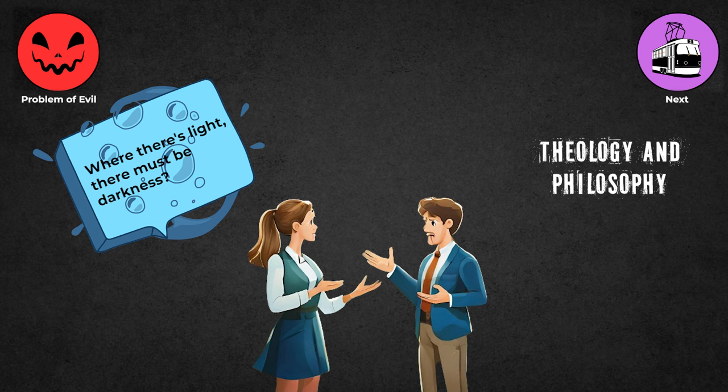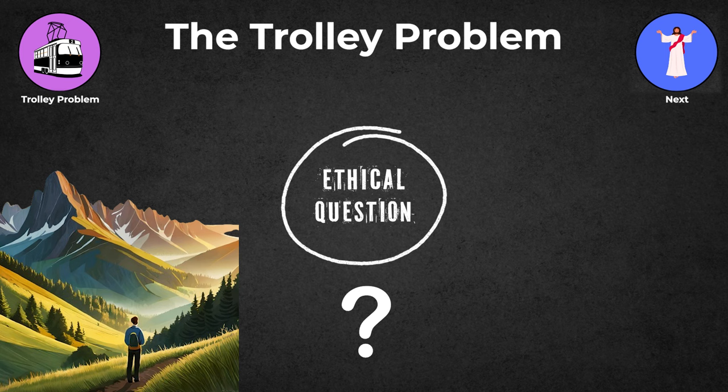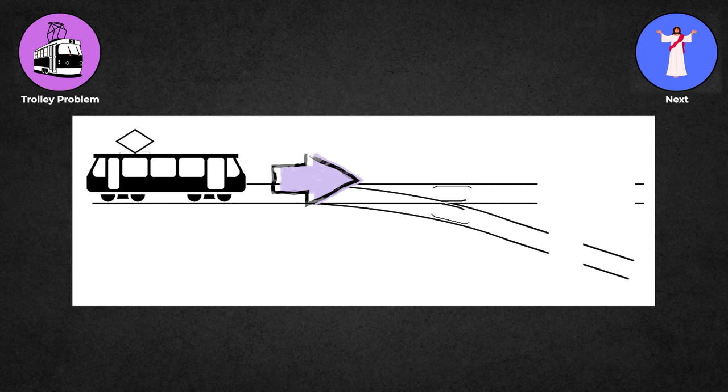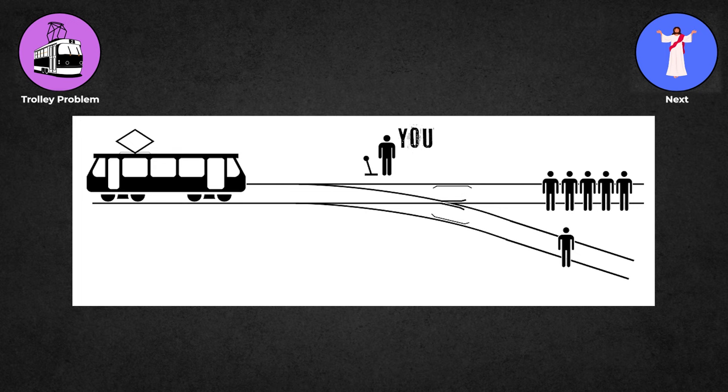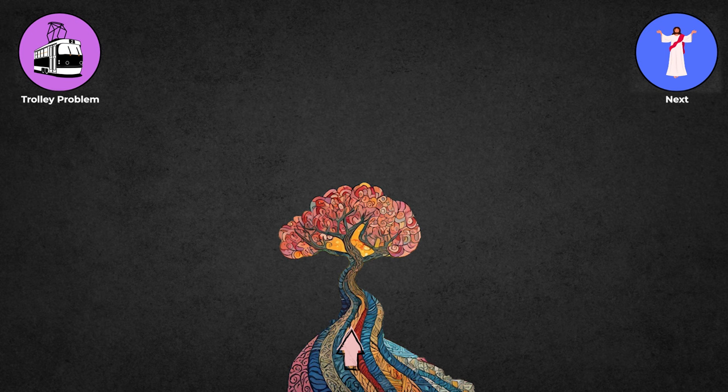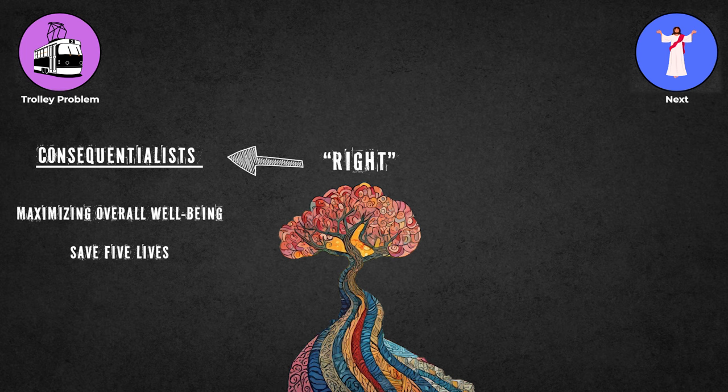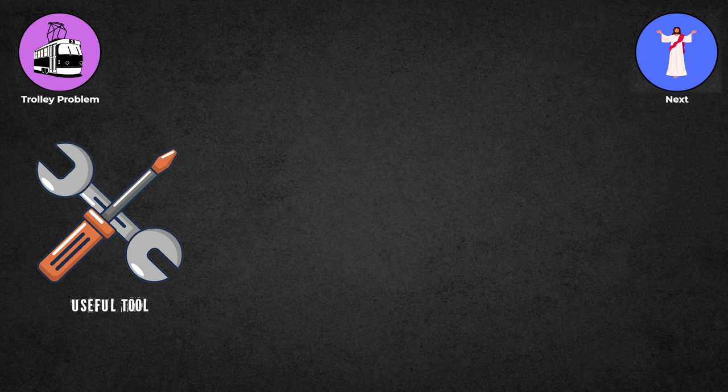The Trolley Problem: This scenario asks the difficult ethical question, would you sacrifice one person to save many people? Imagine a trolley speeding down a track about to hit five people. You're next to a lever that can divert the trolley to another track, but there's one person there. Do you pull the lever to save five people at the expense of one? Different ethical beliefs shape views on what's right. Consequentialists prioritize maximizing overall well-being, favoring saving five lives. Deontologists emphasize defending rights, potentially refusing to pull the lever. The Trolley Problem serves as a useful tool for exploring ethical dilemmas and the principles guiding human decisions.